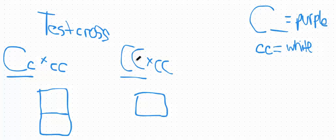So the test cross allows us to determine the genotype or the combination of alleles in an individual showing the dominant phenotype. So these are really simple Punnett squares.